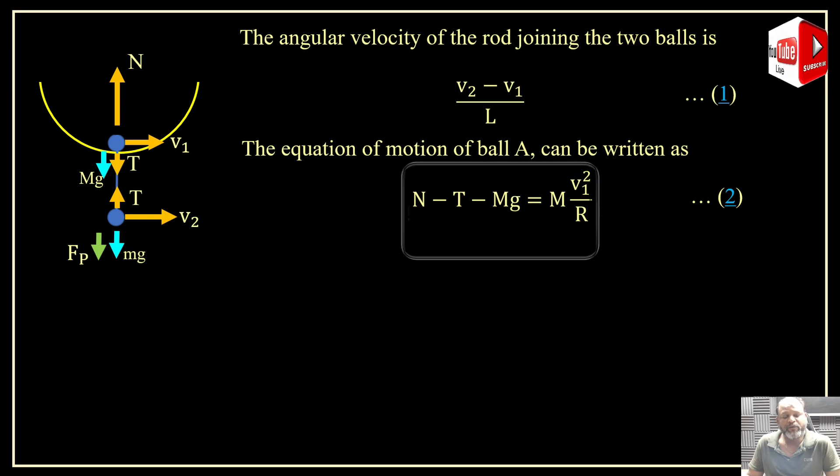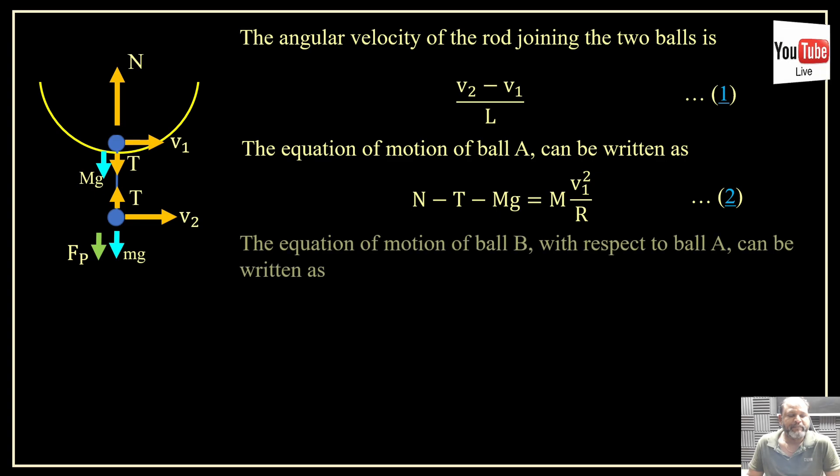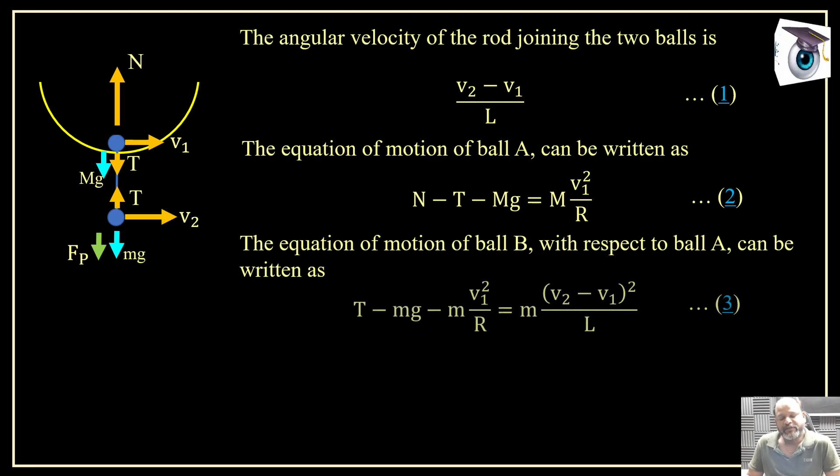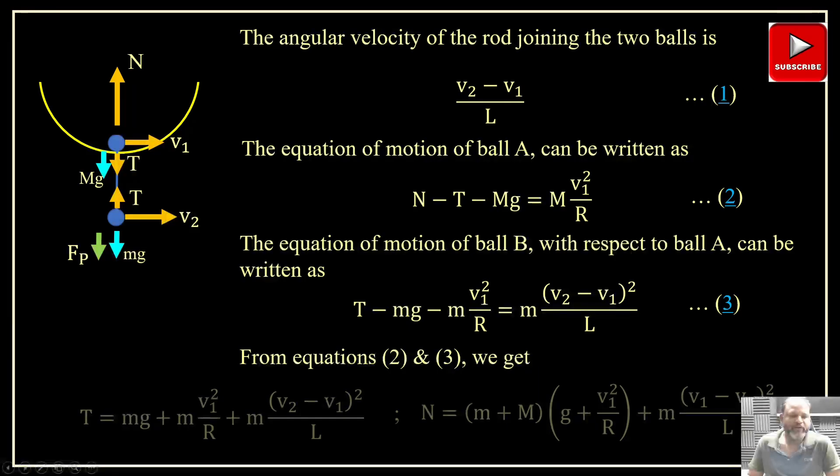Now equation of motion of B with respect to A we are going to write here, and which is circular again. So its a2 acceleration is v2 minus v1 whole squared by L. I hope this part is also clear to you. So net force towards the center is T minus mg minus Fp equals m times v2 minus v1 whole squared by L, which is given here. Pseudo force value we already know here. So if we simplify these two equations, we are going to get the value of tension T and we are going to get the value of normal reaction.